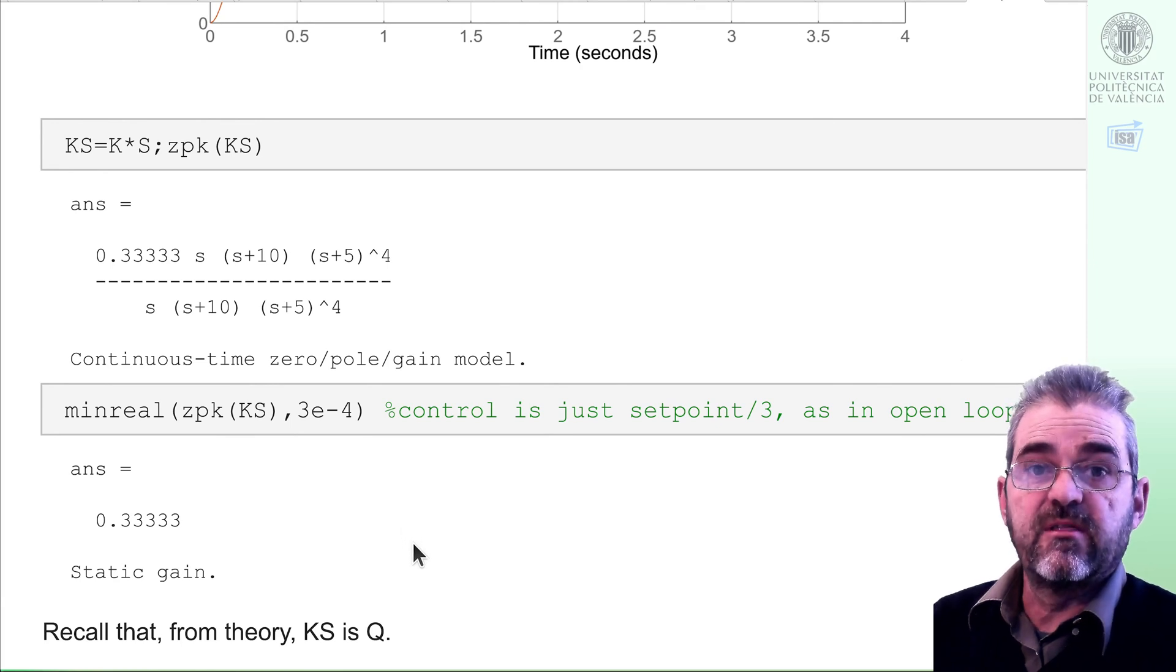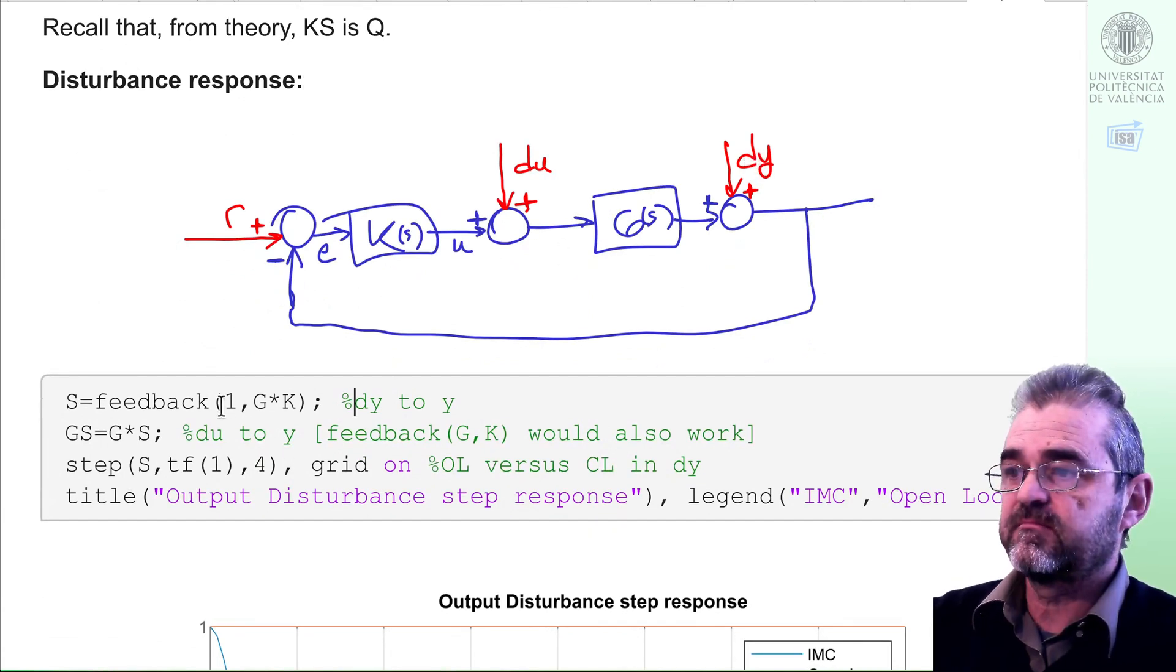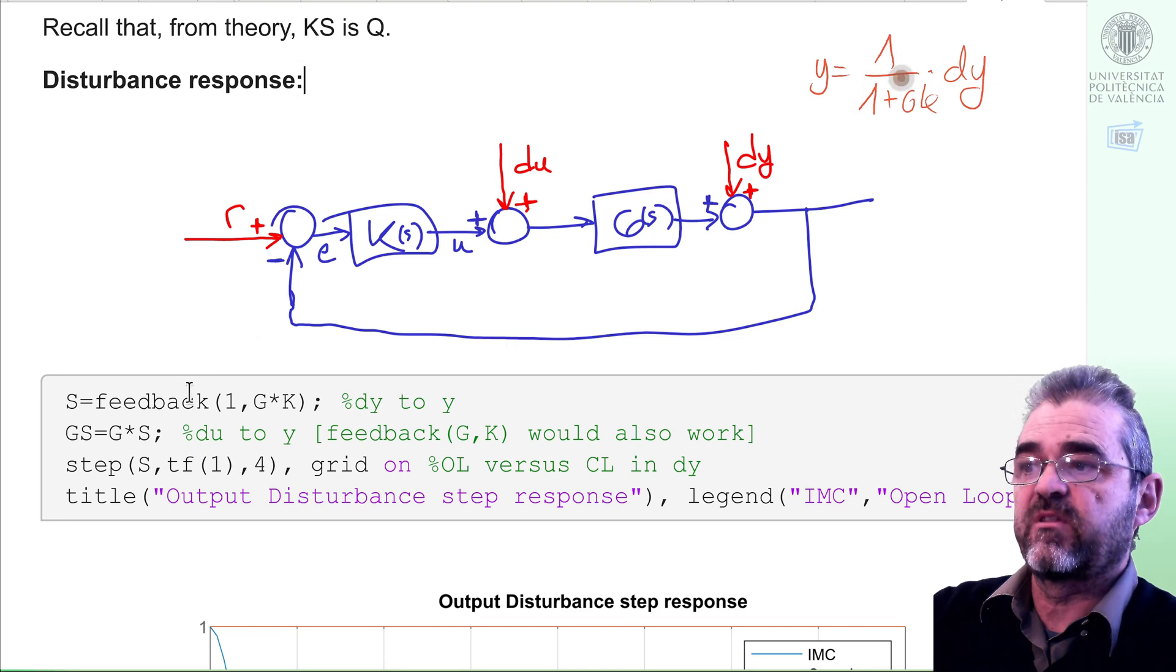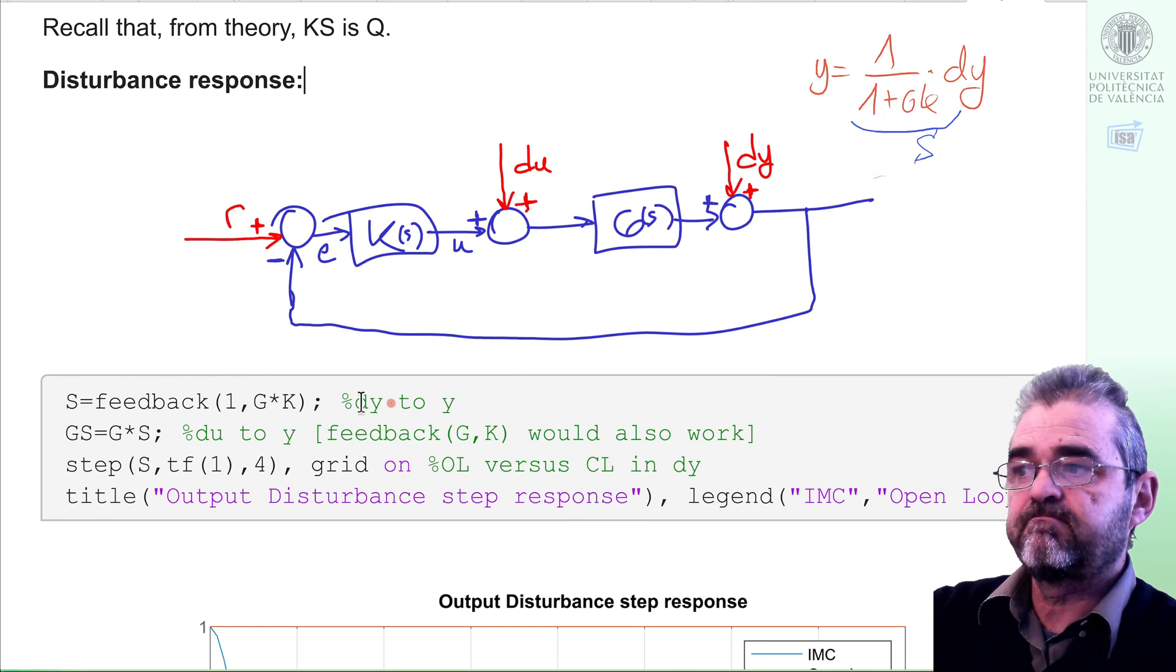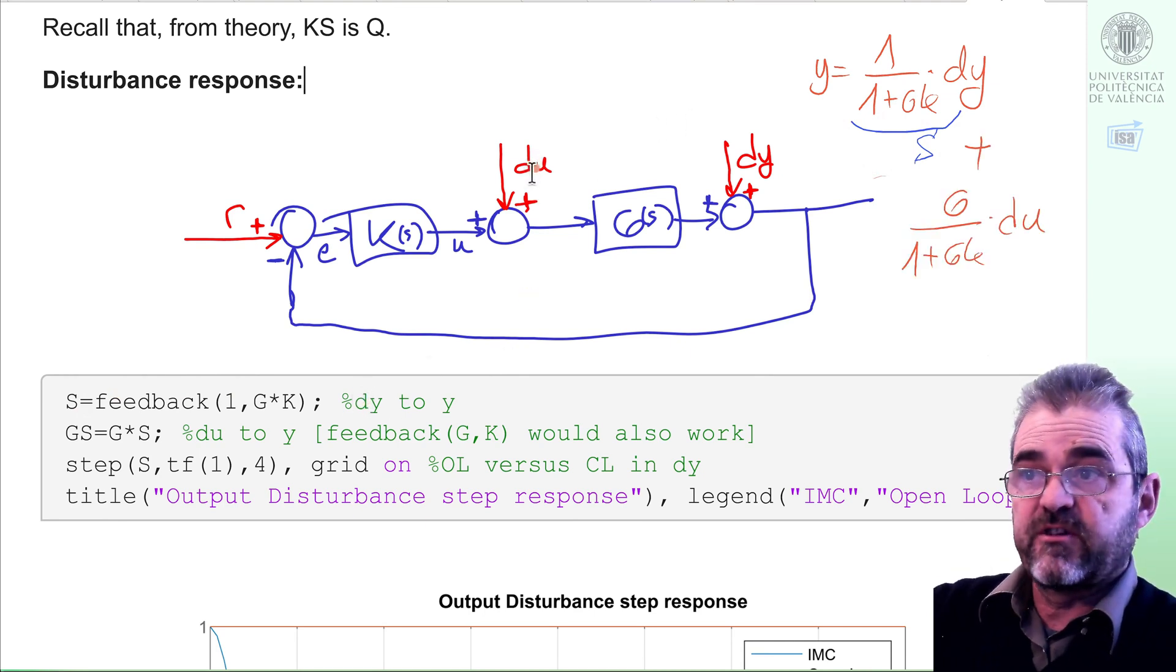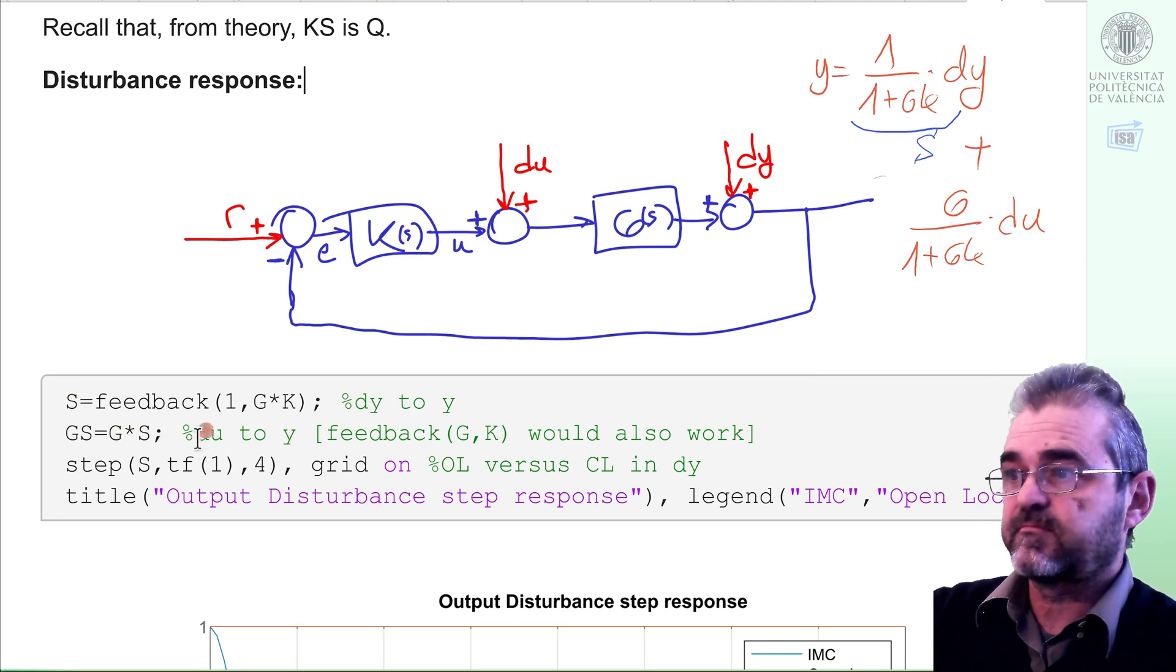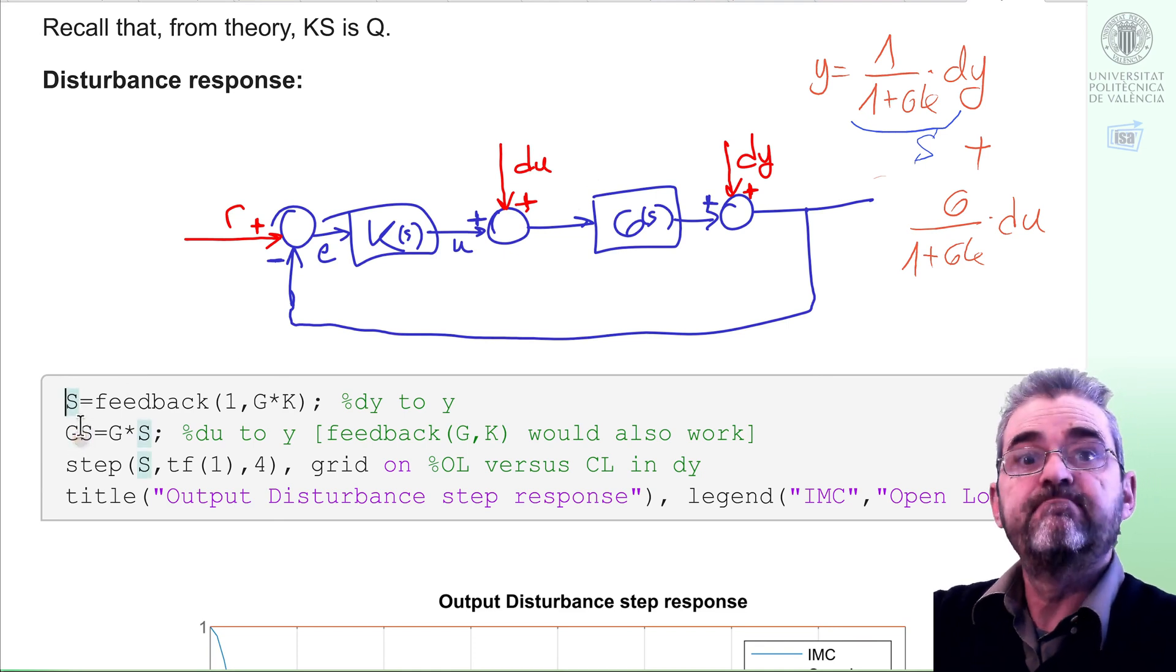But let us discuss now the disturbance response. If we consider output disturbance dy, then in this block diagram we can prove that this is the transfer function. And with a feedback command—direct path 1, feedback path GK—we obtain this capital S, which is this sensitivity function and also the transfer function from input disturbance to output is G over 1 plus GK, G times this capital S. So GS will tell me the behavior to input disturbances. So let us plot the step response of capital S and of GS and see what happens.